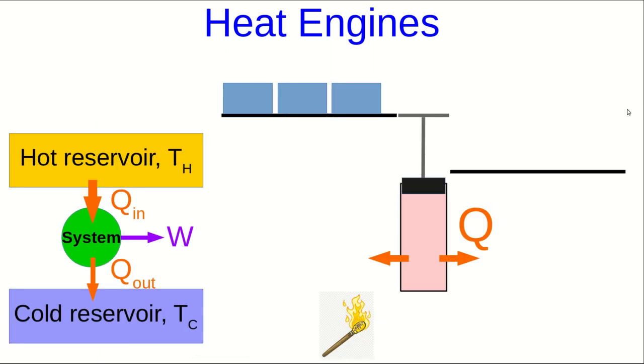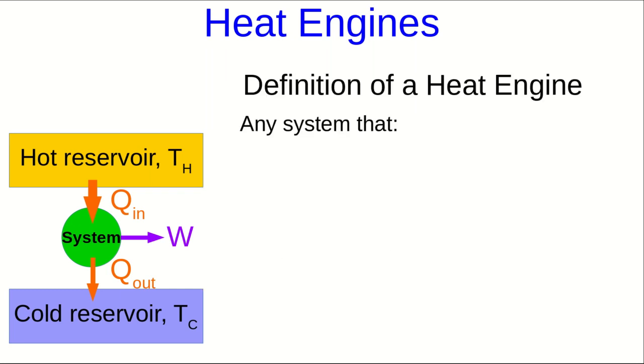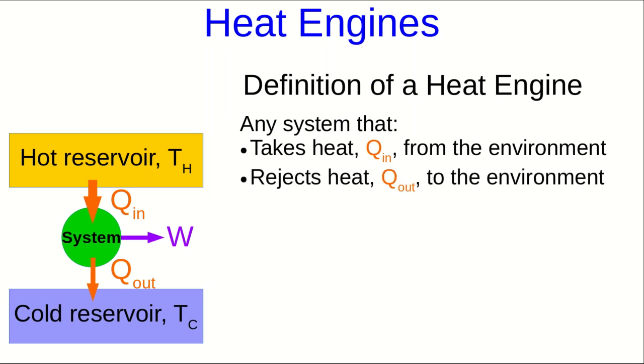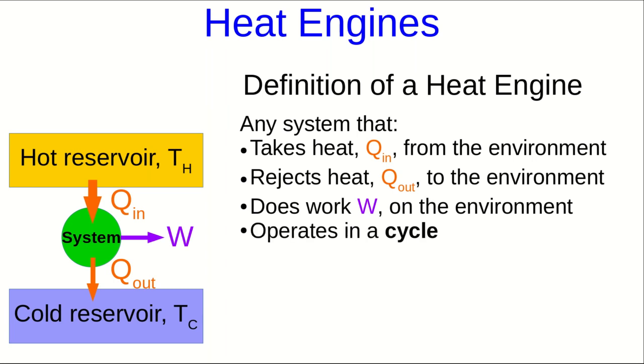This piston is a very simple heat engine. It is a system that sits between what we call a hot reservoir, which in this case is just something that we're burning, and a cold reservoir, which is presumably just the ambient air in the room. And it takes heat in from one, sends heat out to the other, and in the process does some work on the environment. And this is our definition of a heat engine. It's any system that takes heat in from the environment, rejects heat out to the environment, and does work on the environment in the process. And there's one more important thing. Notice that in our piston, it returns to its original state periodically. This is important. A heat engine must operate in a cycle, which just means that it returns to its original state periodically.